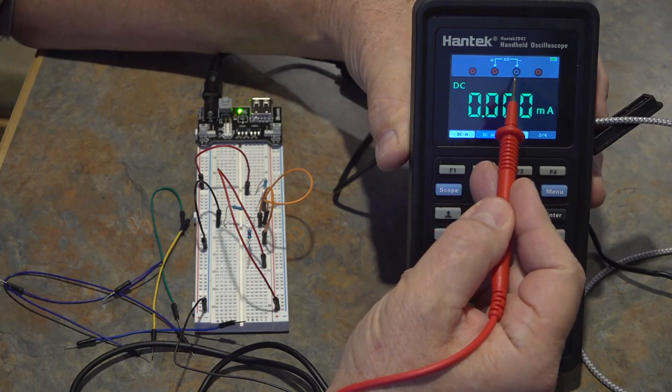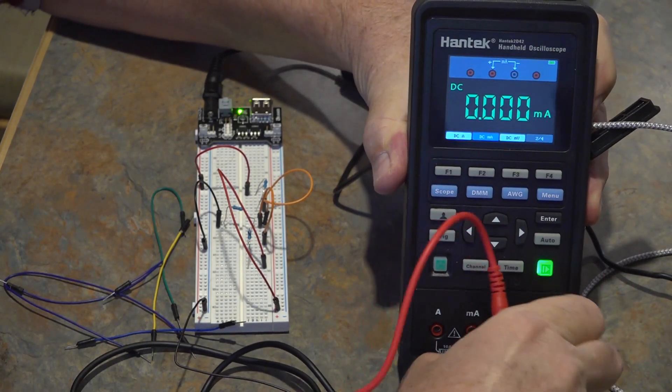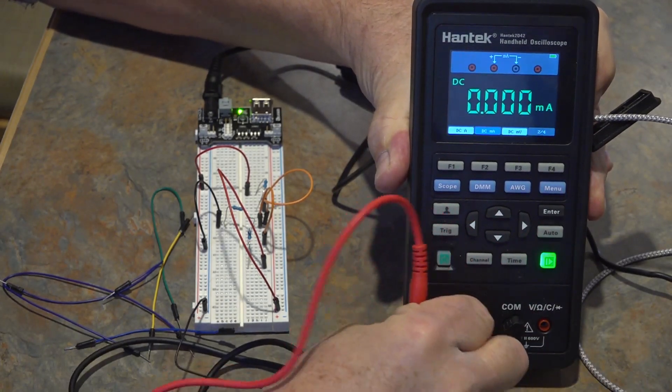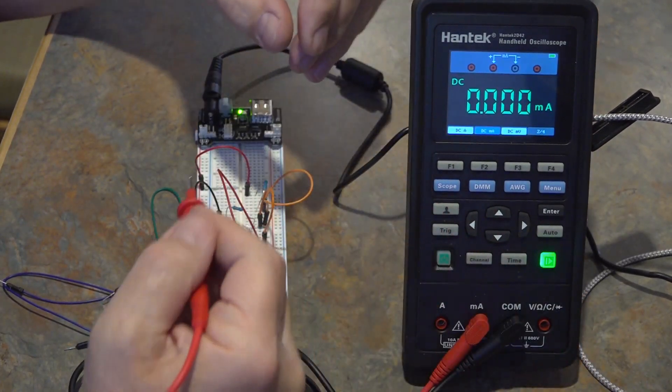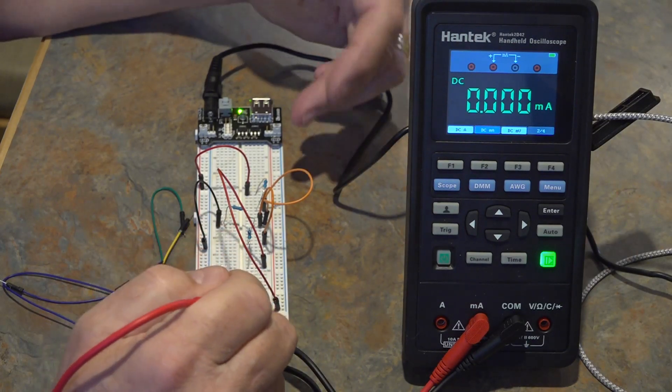And you'll see on the top of the display it shows you you need to move your probes over. The plus probe now has to go over to the milliamp input so you unplug it and you plug it back in there and now we're going to be measuring milliamps. Now keep in mind that when you're measuring current you need to be in series with the path.